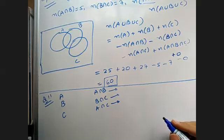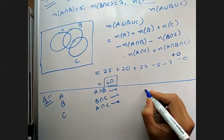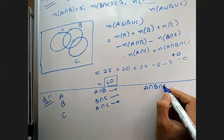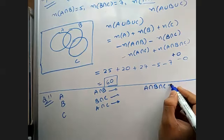And your A intersection B intersection C should be 5. How can we do this?